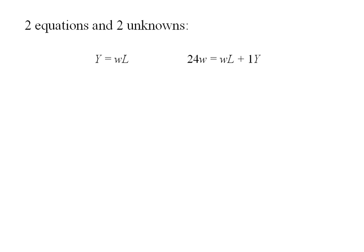Two equations and two unknowns. We can substitute in for Y. We'll have 24W equals WL plus WL. Or 12 equals L, meaning 12 is the number of hours of leisure that this consumer is going to choose.